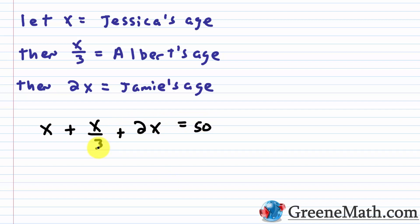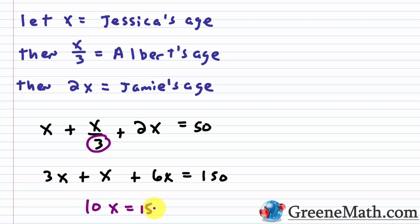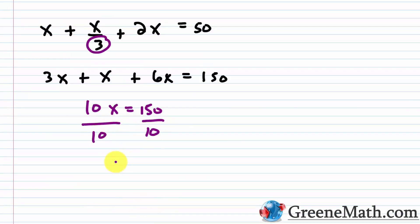To clear the denominator, multiply everything by three: 3x + x + 6x = 150. Combining like terms: 3x + x = 4x, and 4x + 6x = 10x, giving 10x = 150. Dividing both sides by 10, we get x = 15. Since x was Jessica's age, Jessica is 15 years old.